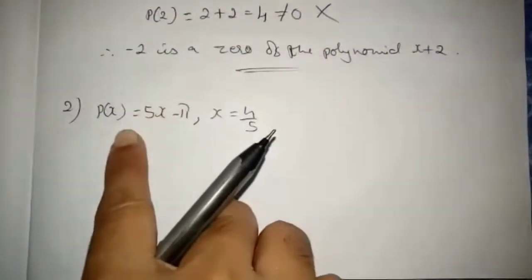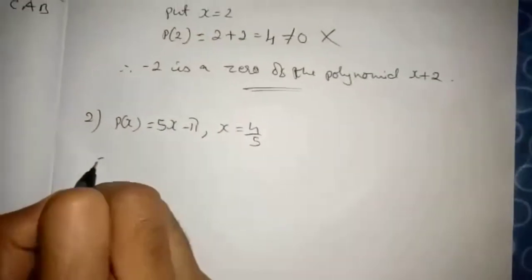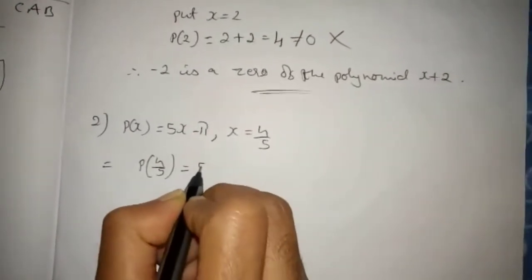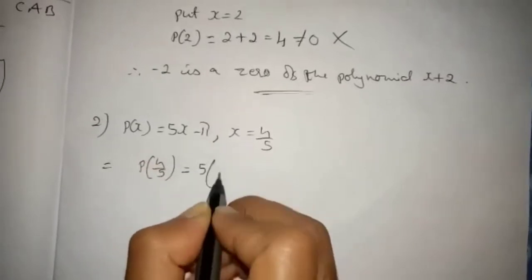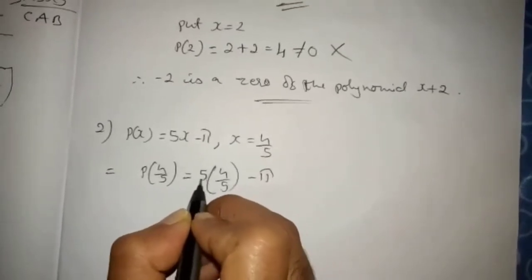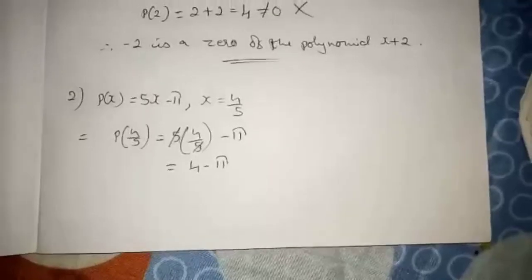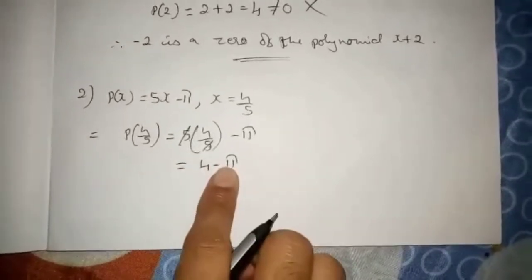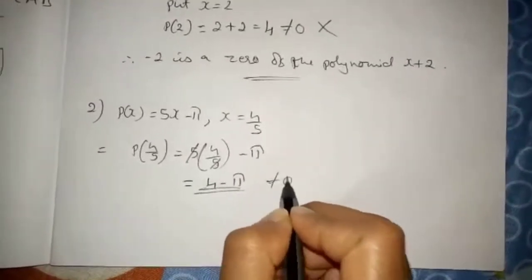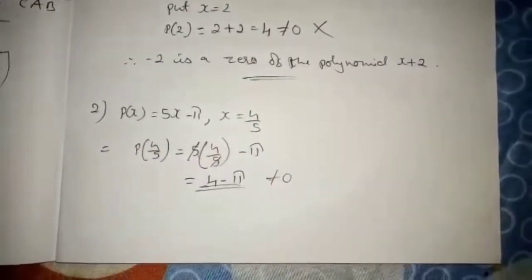Next question. Same way, check for this polynomial whether 4/5 is a zero. You have to substitute x equals to 4/5. So p of 4/5 equals 5 times (4/5) minus 5. The 5s cancel, leaving 4 minus 5, which is not zero. So 4/5 is not a zero of the polynomial 5x minus 5.